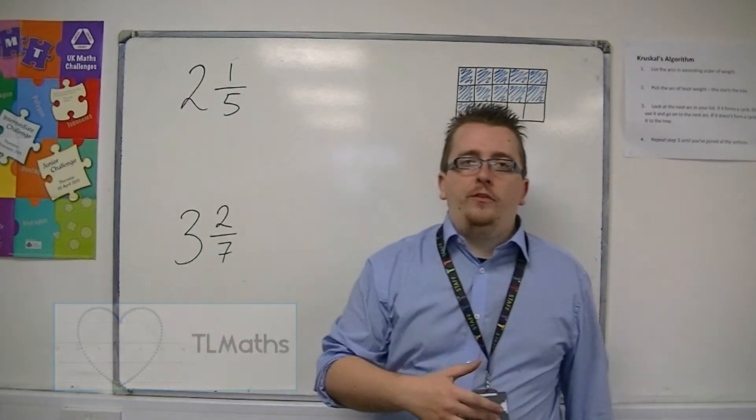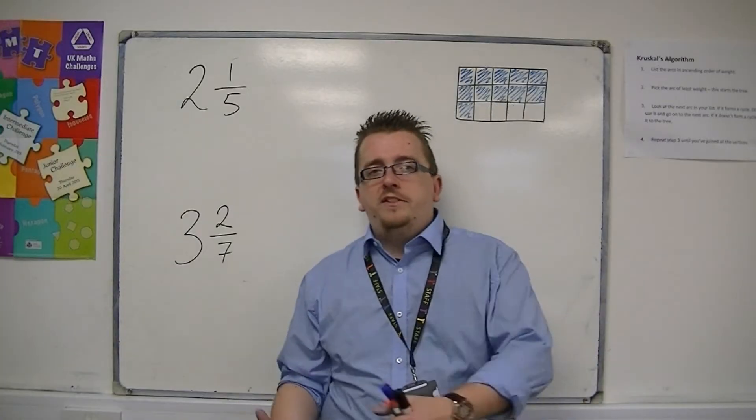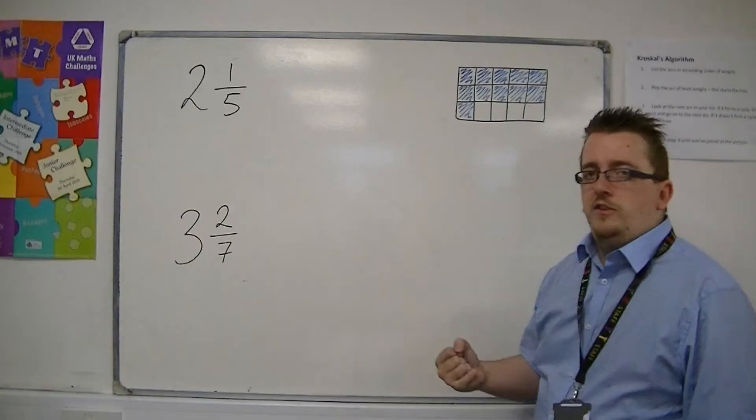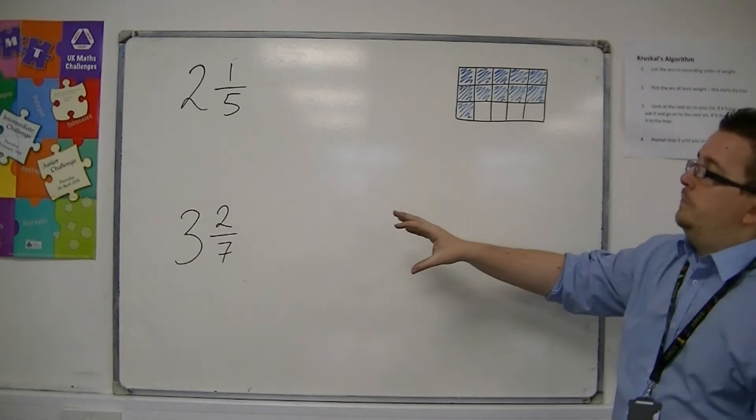Right, to follow on from the previous video, we were looking at improper fractions being turned into mixed numbers. We're now going to look at mixed numbers being turned into improper fractions, so the reverse process. I'm going to go through these two examples.